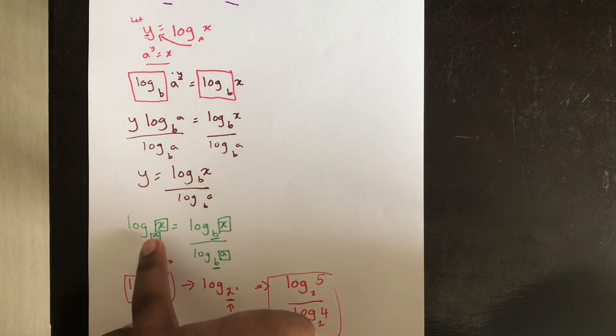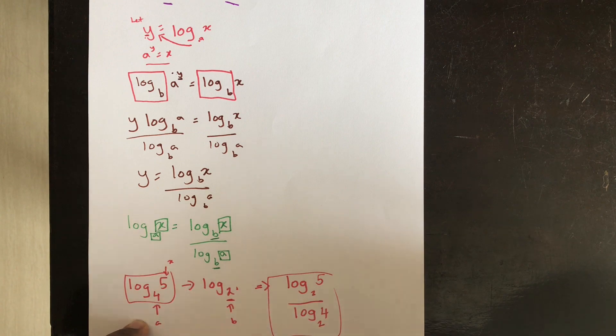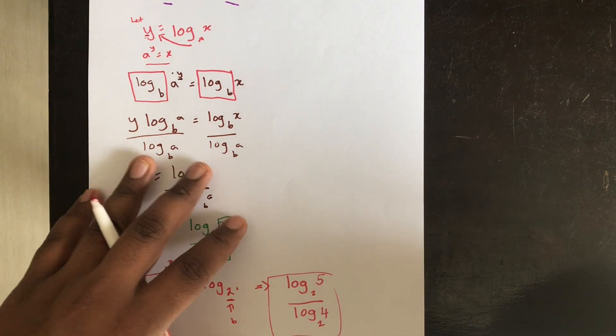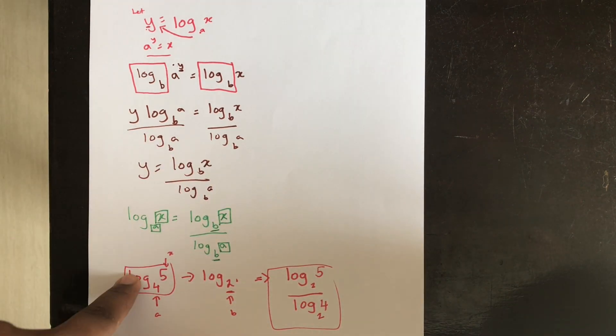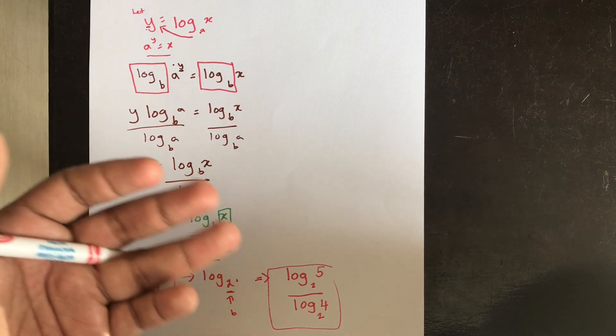So I have just changed this in terms of base 2. I have just translated this formula into this by just substituting stuff. So here my x is 5, my a is 4 and my b is 2 because b is the desired base which I want.